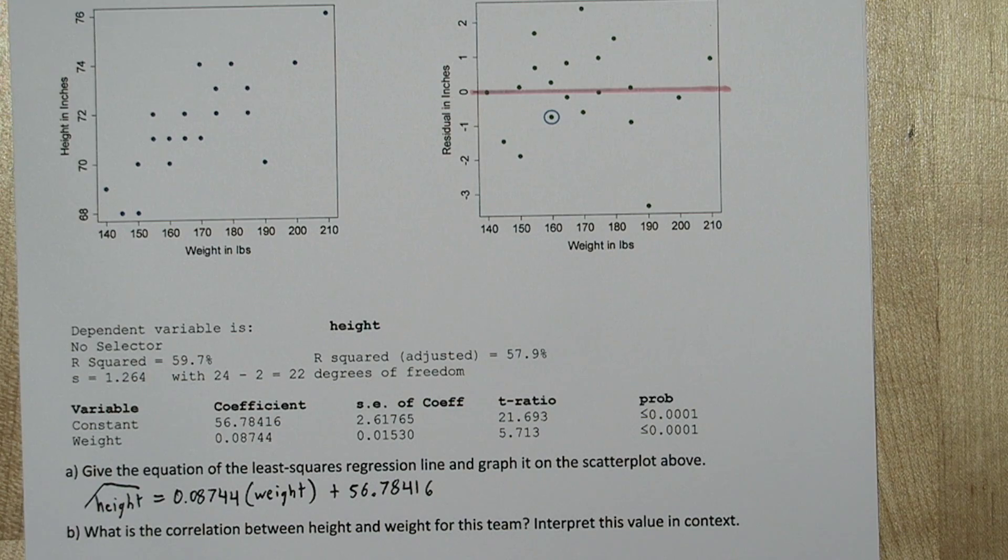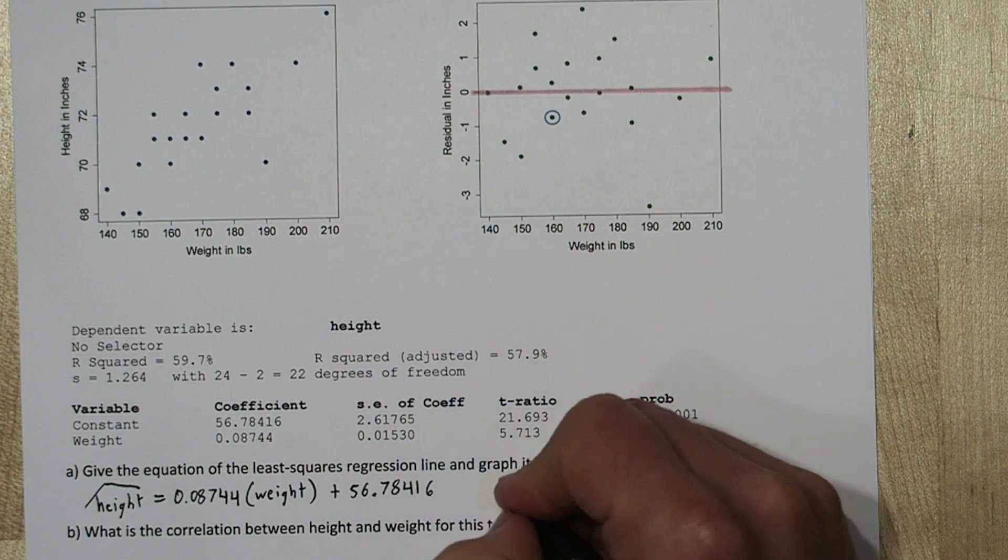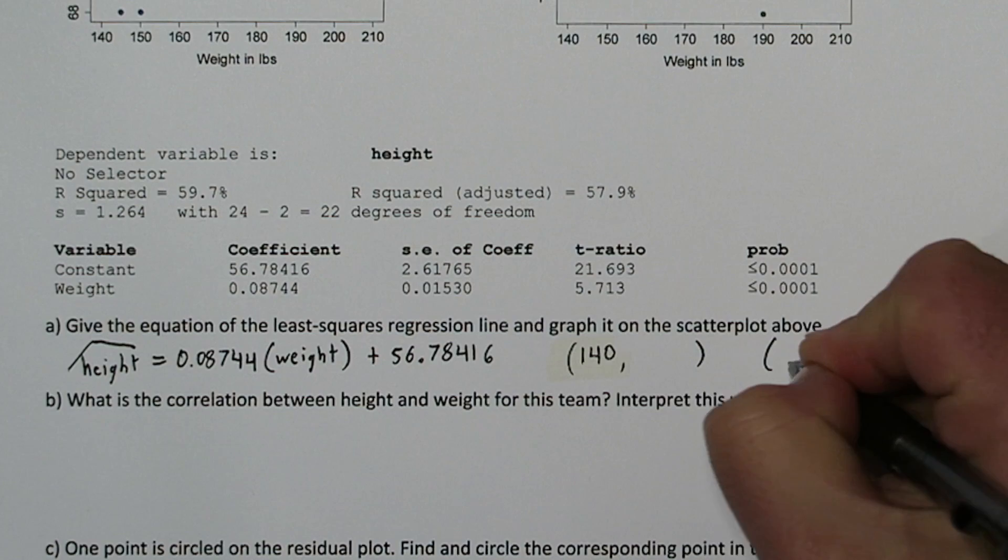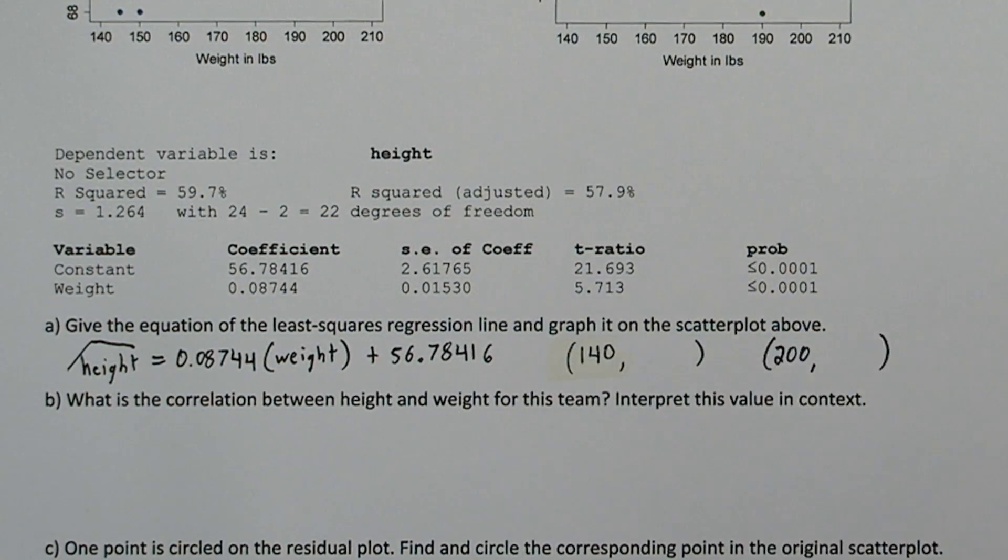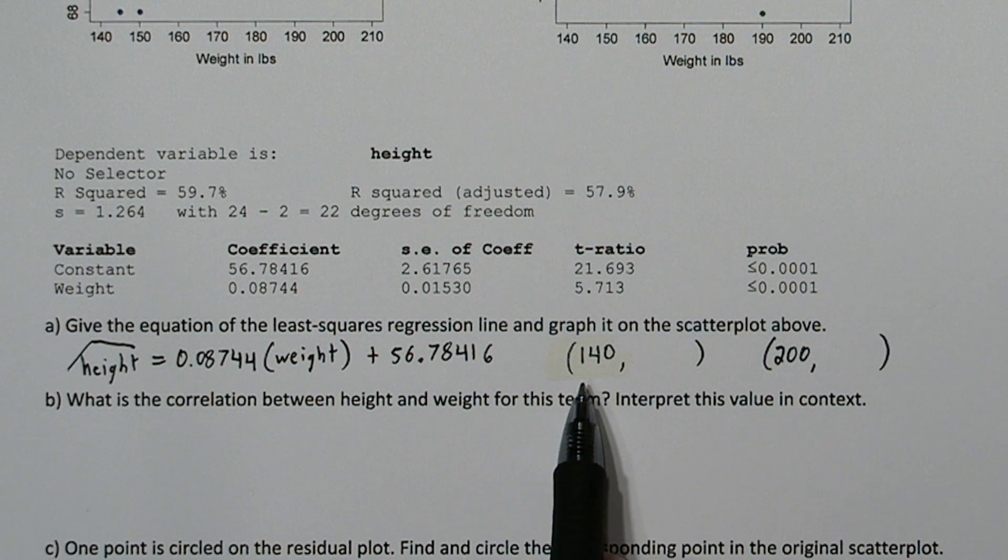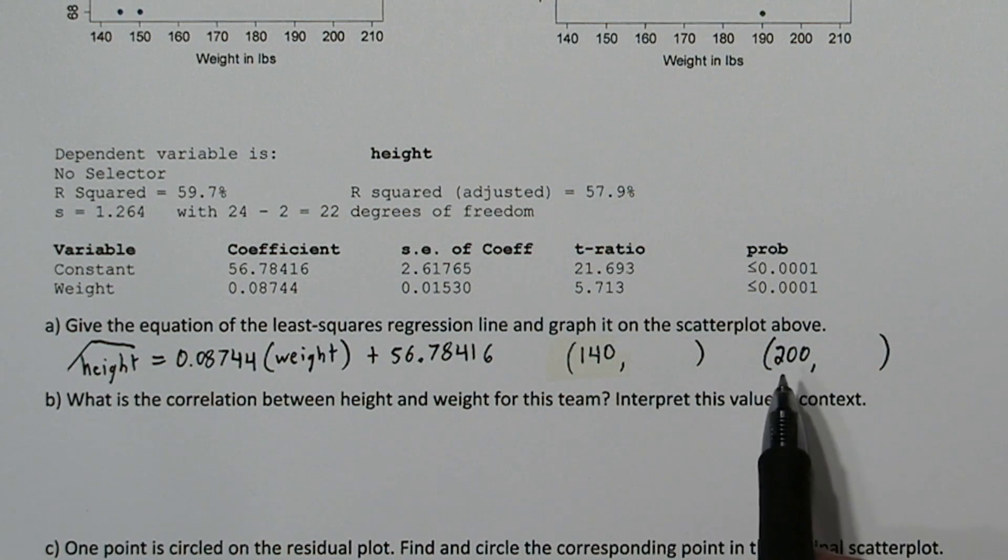So any line can be graphed using just two points. Let's find two points that we know will fit on our scatterplot. If we use our model to predict the height for a player that weighs 140 pounds, and also the height for a player that weighs 200 pounds, we'll have two points that will fit on our scatterplot.